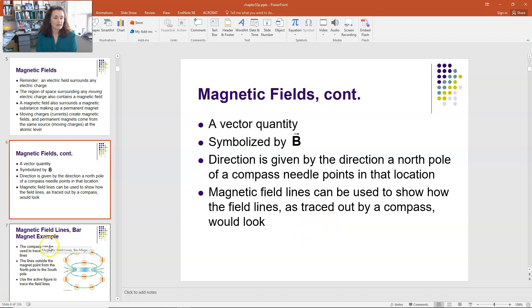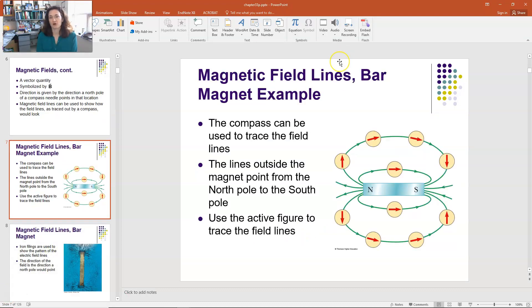You can also use magnetic field lines to show how the field lines as traced out by a compass would look. So what do the magnetic field lines, for example, for a bar magnet look like? So here's what they would look like. They make loops. It kind of looks like an electric dipole, right?